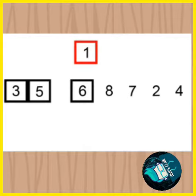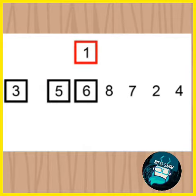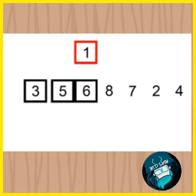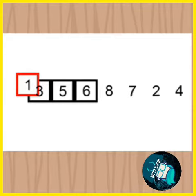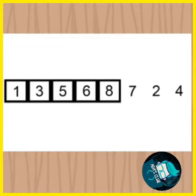Now 3, 5 and 6 becomes sorted list. Then 1 is compared sequentially with 6, 5, 3 and placed before 3 as it is smaller than 3.